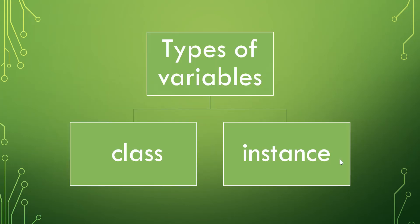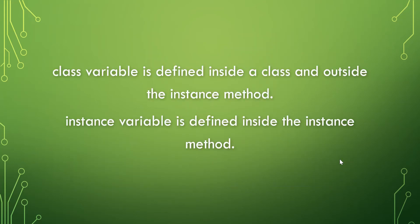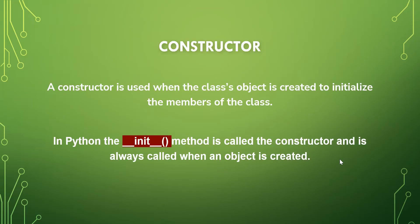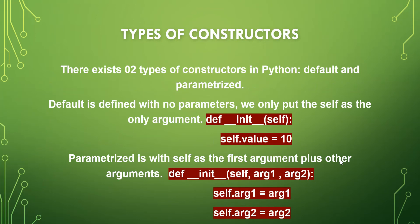We have two types of variables: class variables and instance variables. A class variable is defined inside the class and outside the instance method. An instance variable is defined inside the instance method. The constructor is used when the class object is created to initialize the members of the class. In Python the __init__ method is called the constructor and is always called when an object is created. There are two types of constructors: default and parameterized. Default is defined with only self as the argument and sets a value, while parameterized takes self plus additional arguments like arg1 and arg2, using self.arg1 and self.arg2 to store them.